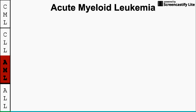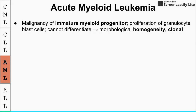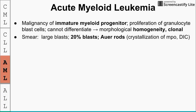Acute myeloid leukemia involves the myeloid progenitor — not the most differentiated cell like CLL, and not the very top stem cell like CML. There is a proliferation of granulocyte blast cells that cannot differentiate, leading to homogeneity and a clonal disease. The threshold for diagnosing AML is 20% blasts. On the smear, blast cells appear larger than fully differentiated granulocytes, which helps identify them.